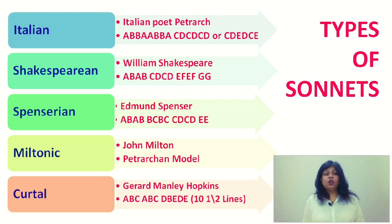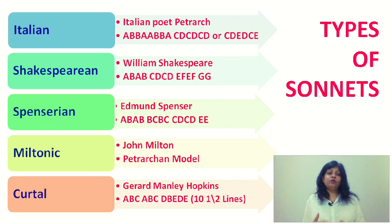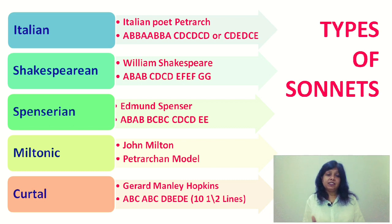Next is John Milton. He also wrote sonnets but he followed Italian poet Petrarch, writing the sonnets in the Petrarchan model — the octave and sestet.